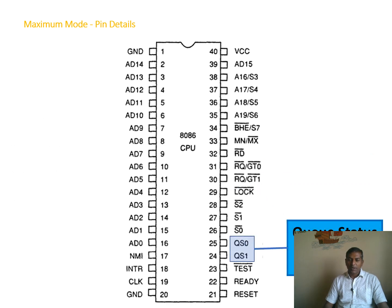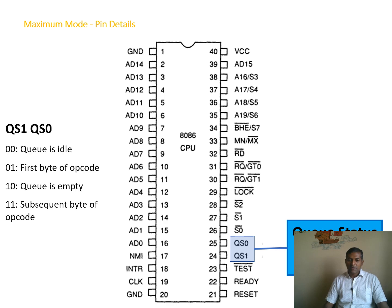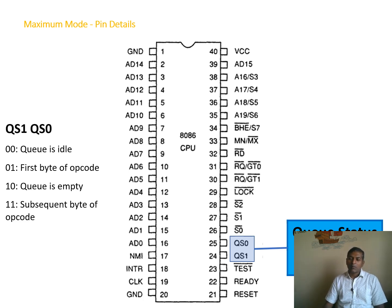QS0 and QS1 allow defining the queue status of the 8086. A coprocessor can understand the status using these signals. If both are zero, the queue is idle. If 0,1, the first byte of the opcode is communicated. If 1,0, the queue is empty. If 1,1, subsequent bytes of the opcode are loaded into the queue. This covers the pin diagram of the 8086; the working process of all these pins will be discussed in the next lecture.